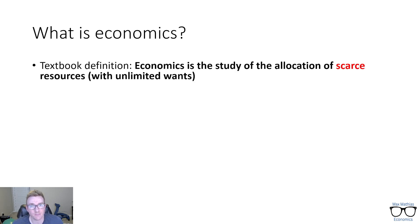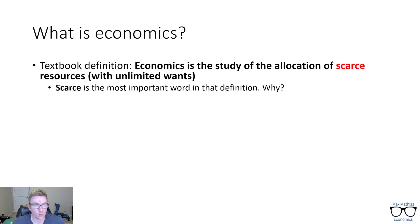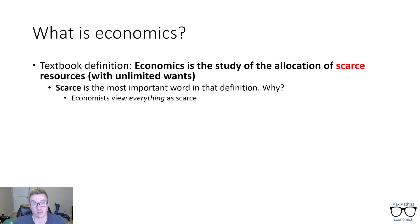To give you a textbook definition: economics is the study of the allocation of scarce resources. Sometimes you'll see people tack on 'with unlimited wants' at the end. Now, that word 'scarce' is highlighted red. Why is that? Well, it's the most important word in that definition. Economists view everything as scarce — I've said it so many times it's starting to look like it's not a word anymore, but I know it is.